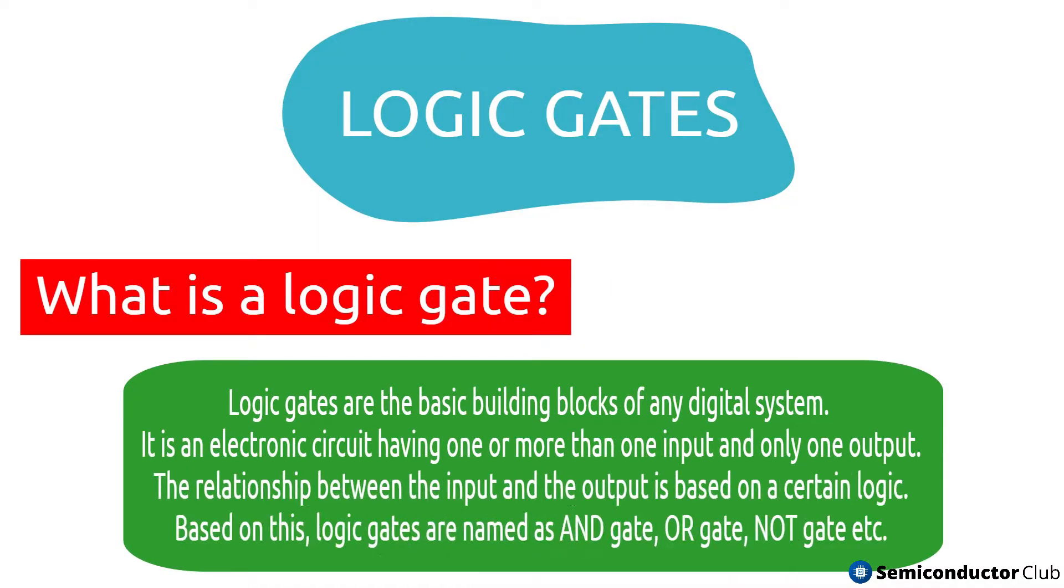What is a logic gate? Logic gates are the basic building blocks of any digital system. It is an electronic circuit having one or more than one input and only one output. The relationship between the input and the output is based on a certain logic. Based on this, logic gates are named as AND gate, OR gate, NOT gate.